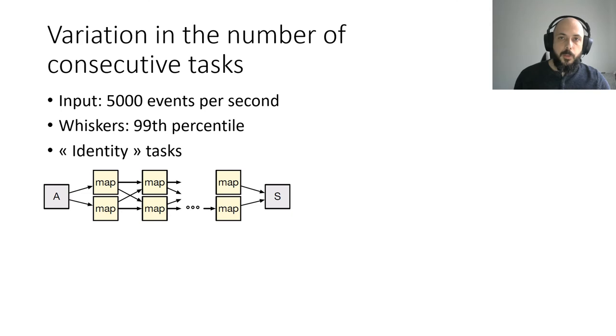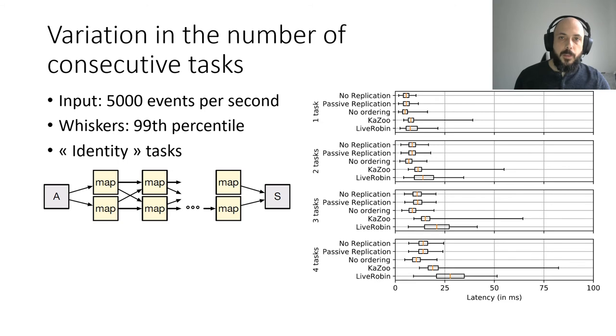In the first experiment, we test the performance of different numbers of consecutive tasks and replication algorithms launched 5 times during 2 minutes for each configuration. In this graph, we can see on the x-axis boxplots of the latencies for each number of consecutive tasks and algorithms. We can see here that the passive replication incurs no visible overhead, and the latency increases with the number of tasks.